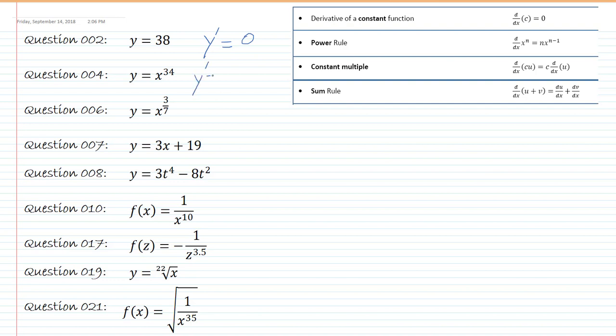The next one I see is the power rule, so I would bring the 34 down front, and then subtract 1, and it becomes 33.